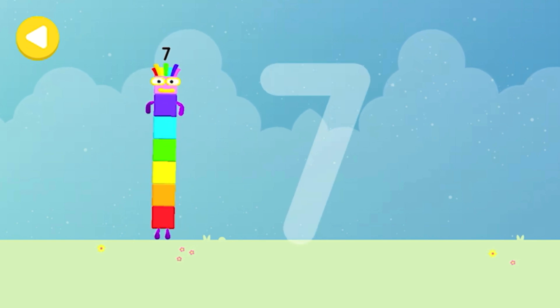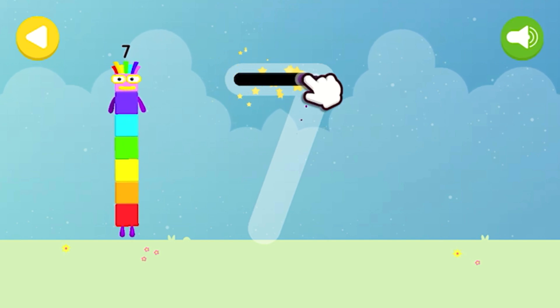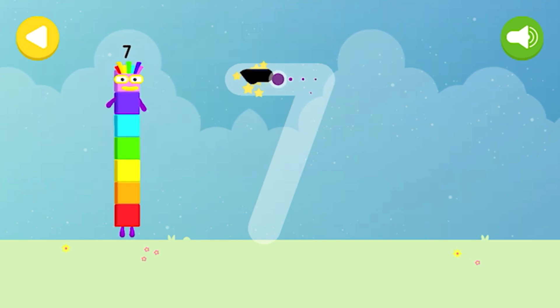Let's make some writing magic! Can you trace number block 7's numberling? A line in the sky and down to the ground! That's how lucky 7's found!